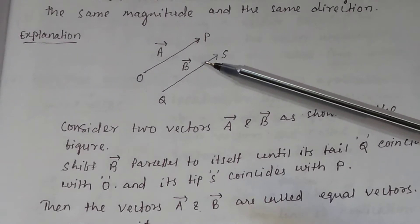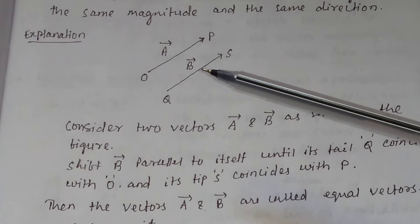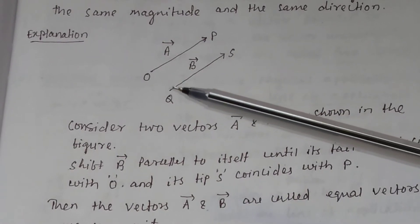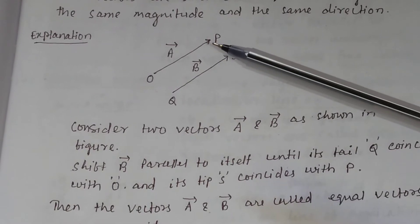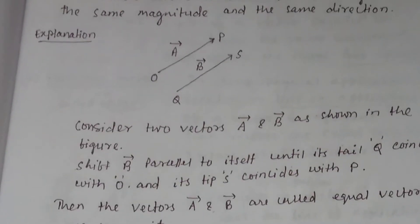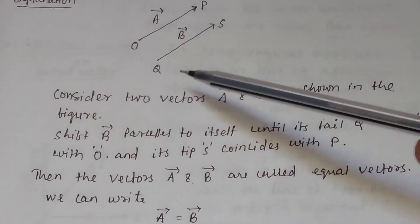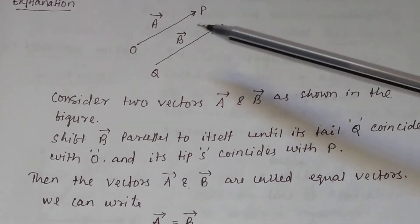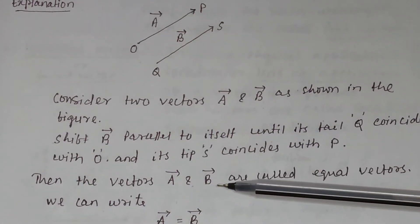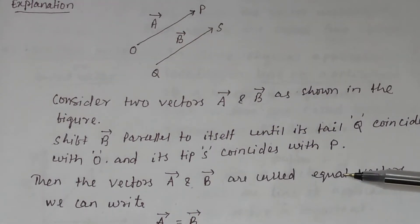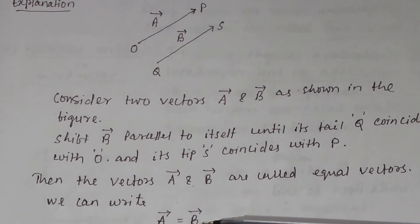Shift vector B parallel to itself until its tail Q coincides with O and its tip S coincides with P. If the tail Q coincides with O and tip S coincides with P, then we say that vector A and B are equal vectors, and we write vector A is equal to vector B.